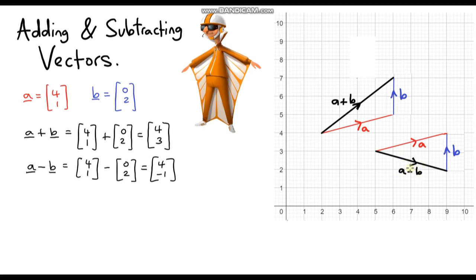Let's check the horizontal and vertical components. We're going 1, 2, 3, 4 to the right, so that's positive 4. And we're going down 1, which is negative 1. So we are correct. Whenever we are adding or subtracting vectors, we simply add or subtract the corresponding components.